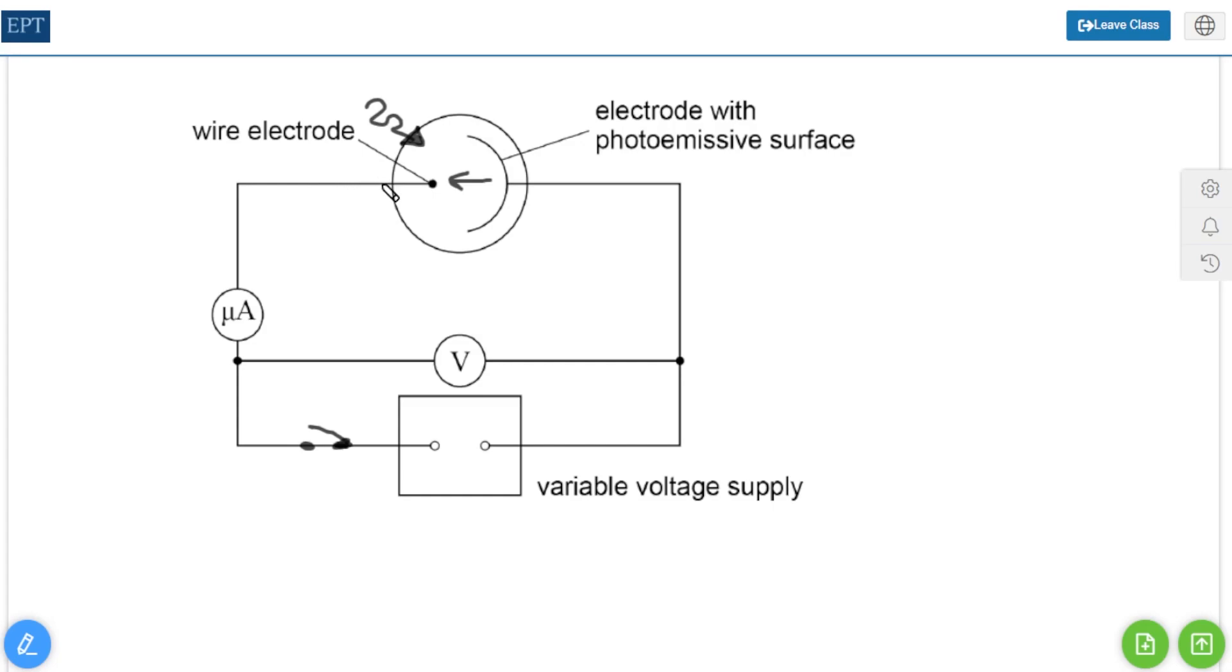This means we have current because something is being pushed on here and something is travelling across the gap, an electron from the surface of the photoemissive metal. Therefore we have a small current. Notice it is indeed a small current because the meter says we are measuring microamps.